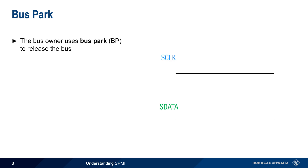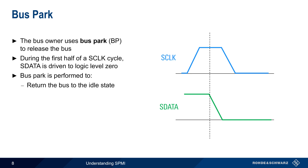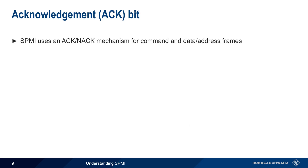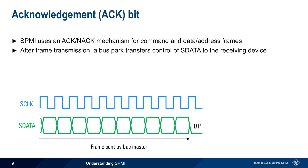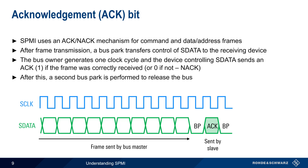Bus park is another important feature of SPMI, and is used by the bus owner to release the bus. A bus park occurs when, during the first half or middle of a clock cycle, SDATA is driven low. Bus park is performed in order to return the bus to the idle state, and thus allow another device to take control of the bus in order to send a command or an acknowledgement. Acknowledgements are used in SPMI to ensure reliable communications. After the frame is sent, a bus park is performed to transfer control of SDATA to the receiving device. A bus owner, who is still in control of the clock line, generates one clock cycle, during which the device controlling SDATA can send either a 1 to acknowledge correct reception of the frame, or a 0 as a negative acknowledgement or NAK. After this, the bus master performs a second bus park in order to release control of the bus.